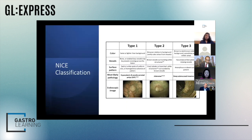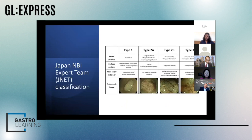How do we use these technologies? They're push-button technologies. The NICE classification is for narrowband imaging and it's very simple — you use a straightforward structure looking at the color, the vessels, and the surface pattern to classify your polyps into benign hyperplastic polyps, adenomas, or cancers.